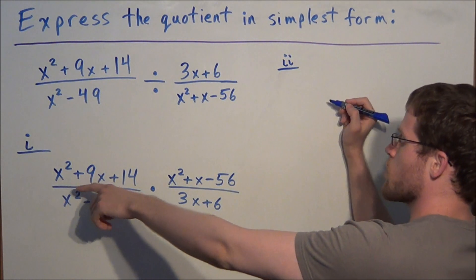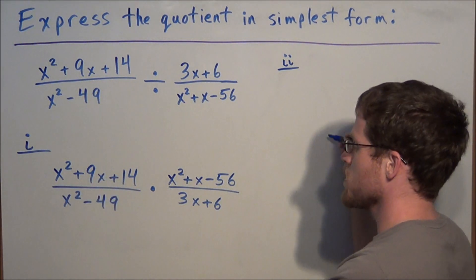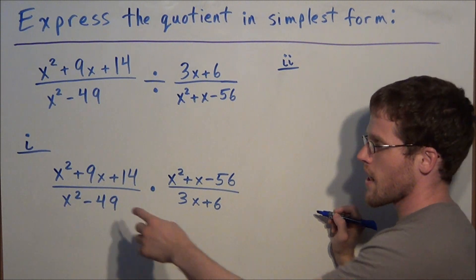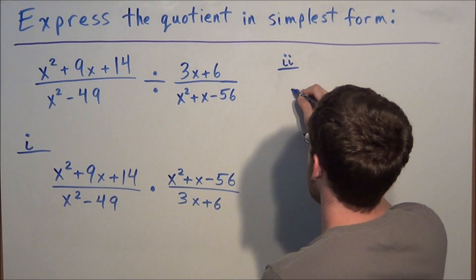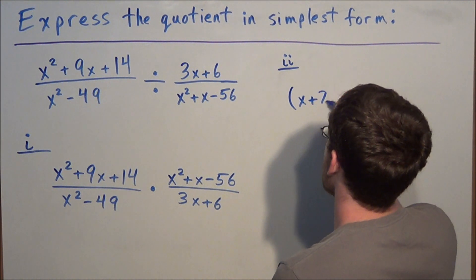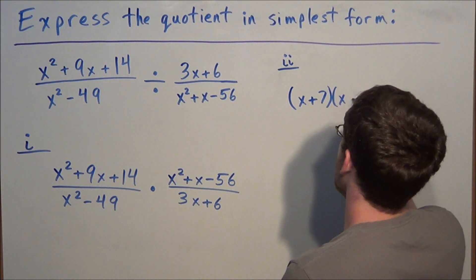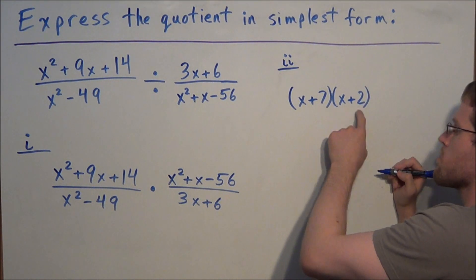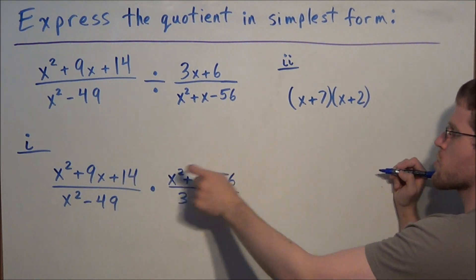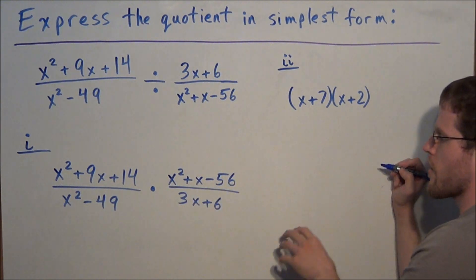We're looking at x squared plus 9x plus 14. So we need two numbers that add to positive 9 and multiply to positive 14. We'll arrive with x plus 7 times x plus 2. This could quickly be checked because 7 plus 2 is 9, 7 times 2 is 14. So this is the correct factoring.